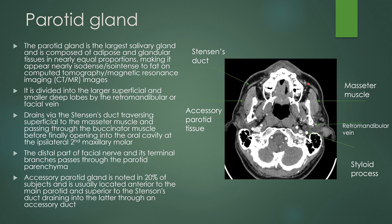The distal part of the facial nerve and its terminal branches pass through the parotid parenchyma. Accessory parotid gland is noted in about 20% of patients, usually located anterior to the main parotid gland, superior to Stenson's duct. So if you see parotid gland here, you might see some accessory parotid tissue anterior to that normal parotid tissue.